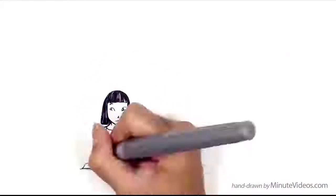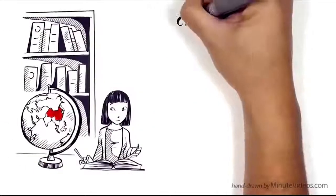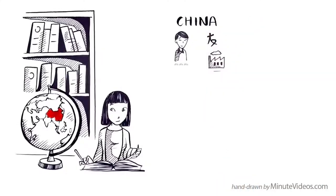Chunking also helps to understand complex topics, say trade between China and India. First, study China, the people, the culture and the economy. Then summarize and put what you learned in your own simple language.